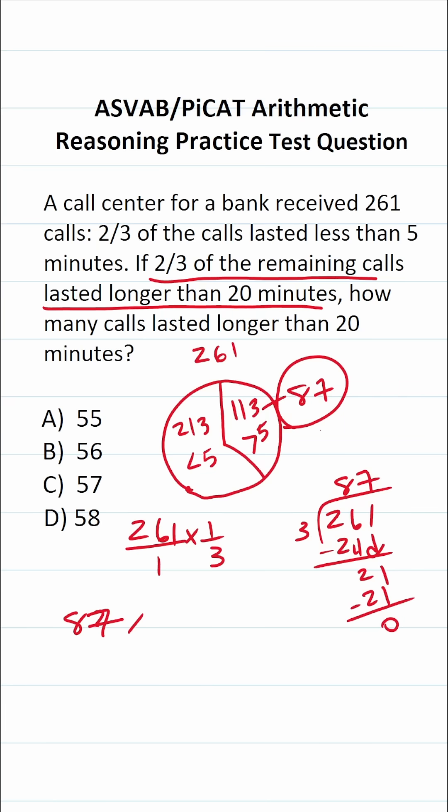So now we're going to find out what two-thirds of 87 is. So we're going to do 87 times two-thirds. I could write 87 as a fraction by placing it over one. The sum of the digits in 87, 8 plus 7 is 15, is divisible by three. So I know 87 is also divisible by three.